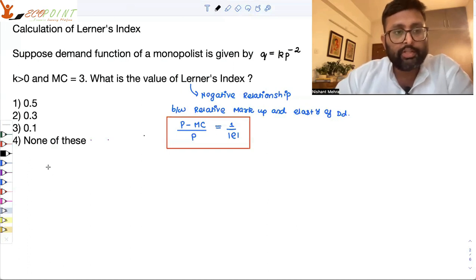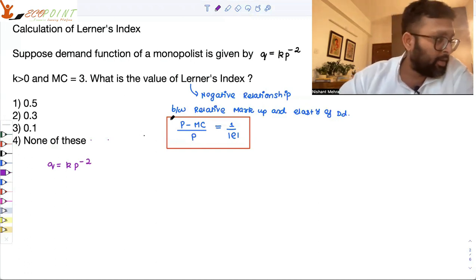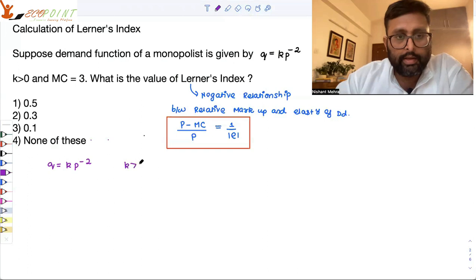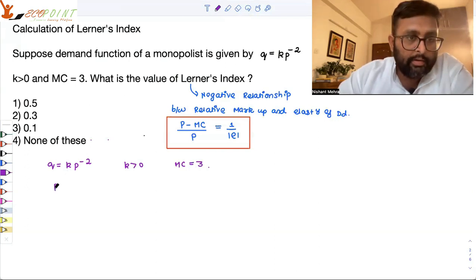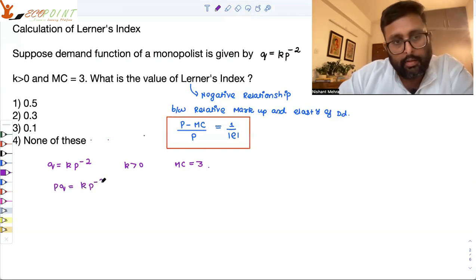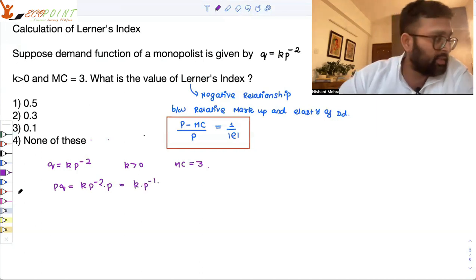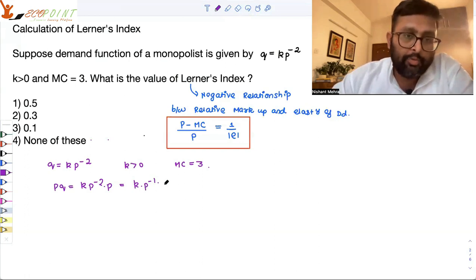Now look at the question. Your question says this. You have q is equal to k p to the power minus 2. I need this p minus MC upon p. You are given with k greater than 0 and MC equals to 3. But I can write this pq as p to the power minus 1. This is what my revenue is or k upon p.